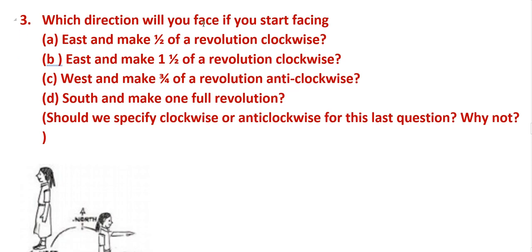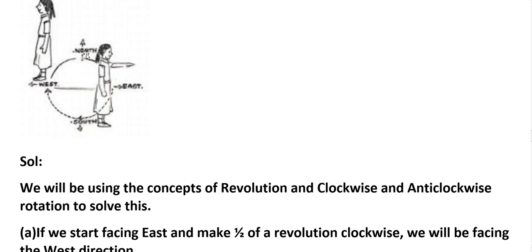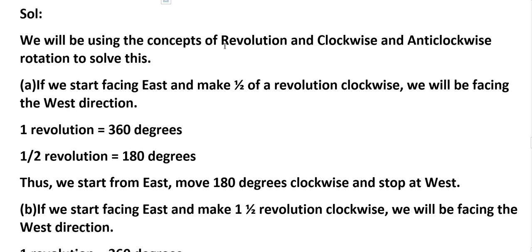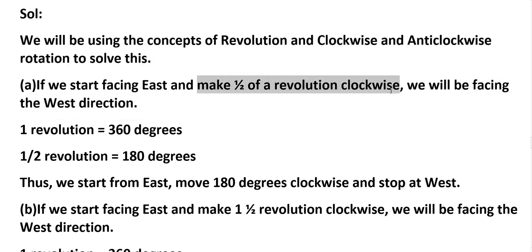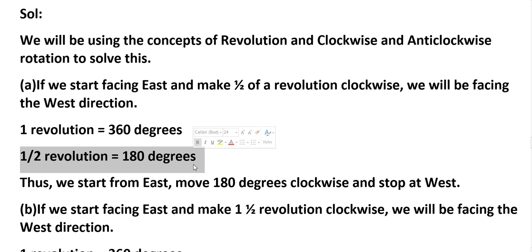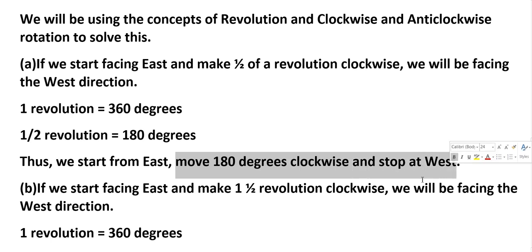Third problem: which direction will you face if you start facing east and make half a revolution clockwise? Using the concepts of revolution and clockwise/anticlockwise rotation: if we start facing east and make half of the revolution clockwise, we will face the west direction. One revolution equals 360 degrees, half revolution is 180 degrees. Thus, starting from east, moving 180 degrees clockwise, we stop at west.